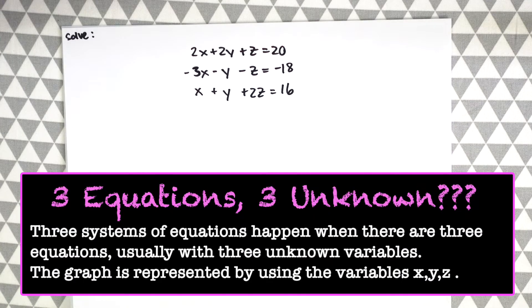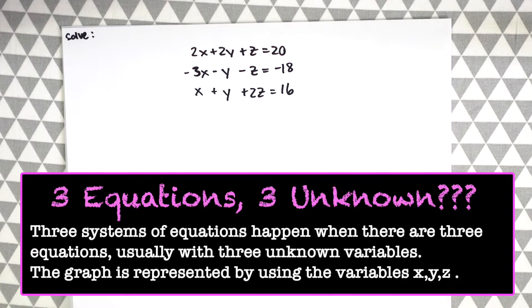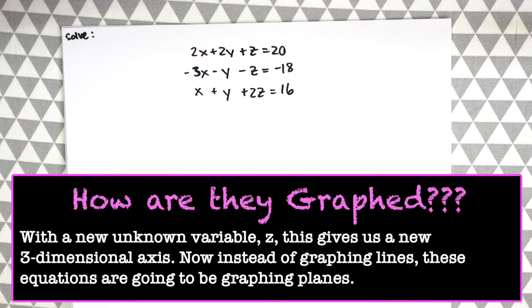So three systems of equations happen when there are three equations usually with three unknown variables usually represented as X, Y and Z, and they are graphed or shown algebraically. So we're all used to using the two dimensional coordinate plane where X goes across and Y goes vertical, but now with a new unknown variable Z, this gives us a new three-dimensional axis. So we have the X axis and the Y axis which we're used to, but now we also have this third Z axis which makes it 3D, which is pretty cool.